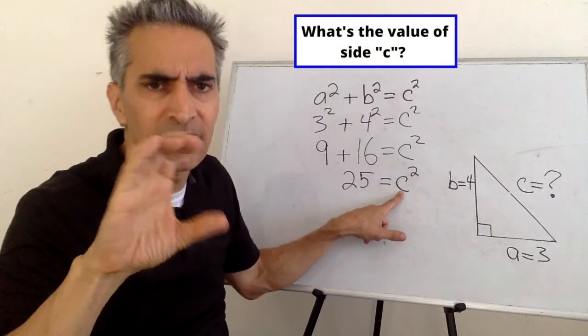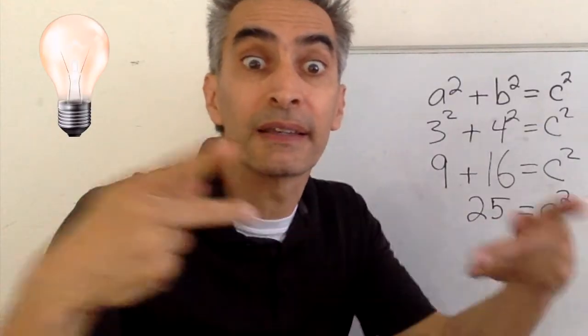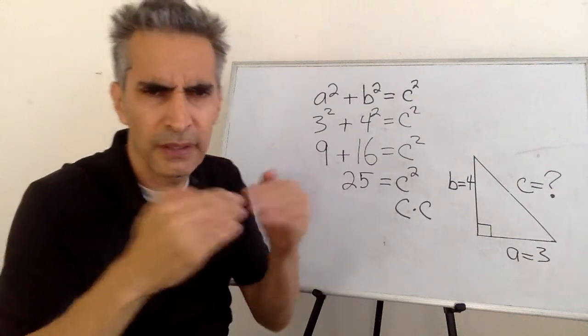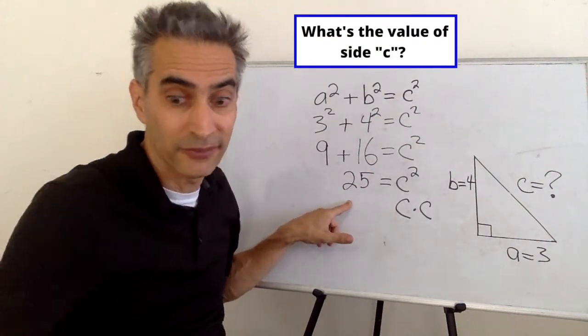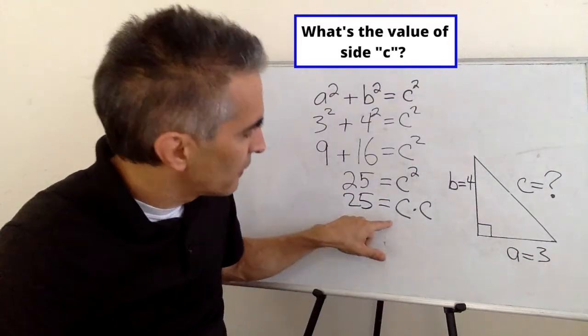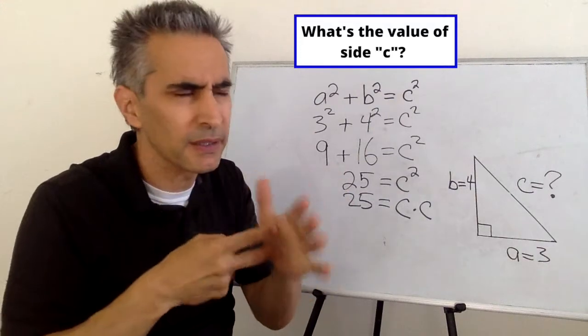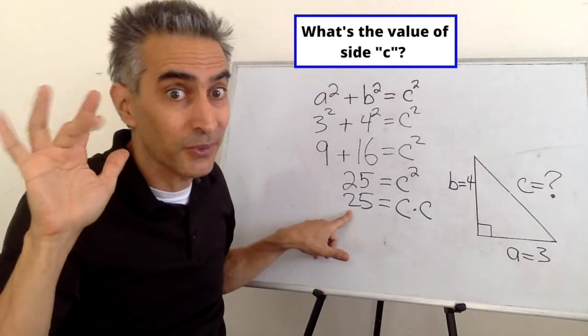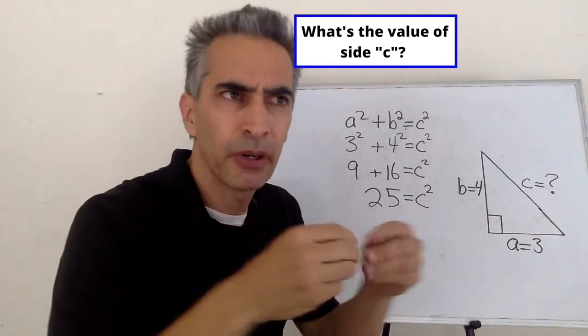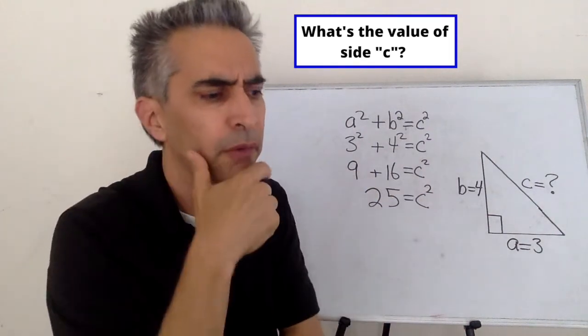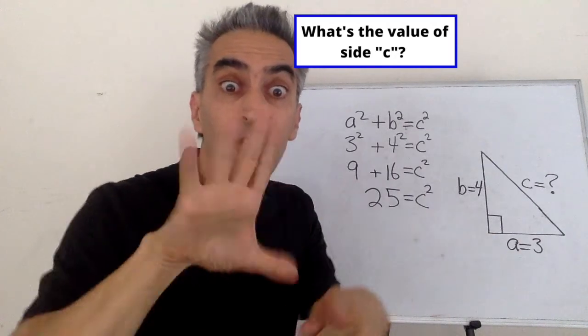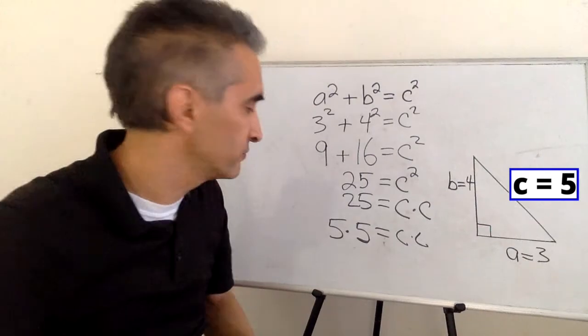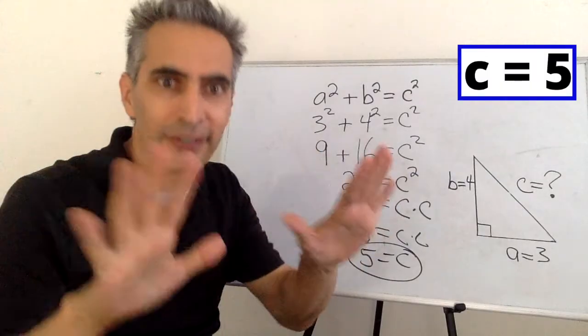C squared means C times C, which equals 25. C times C means a number times the same number equals 25. Oh, 5! 5 times 5 equals 25. C equals 5, and we're finished.